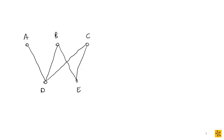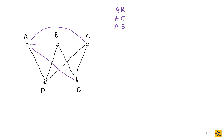We're going to go through some examples of finding the closure of a graph. First, identify all non-adjacent vertex pairs. Here: a and b are non-adjacent, a and c are non-adjacent, a and e are non-adjacent. Then a is adjacent to d. Moving to b: b and c are non-adjacent. For c, we've already covered c-a and c-b. Then for d, the only non-adjacent pair is d and e. Those are all the non-adjacent pairs to investigate.